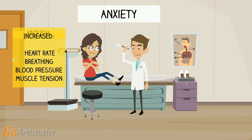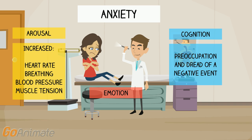Arousal is regulated by the sympathetic nervous system, including increased heart rate and blood pressure. However, a person can experience arousal without feeling anxious. In addition to arousal, anxiety involves dread that a bad event will occur in the future. Usually, the dread is associated with a perceived lack of control over the event. The third component of anxiety is negative emotion, which typically involves experiences of fear, sadness, irritability, or anger.